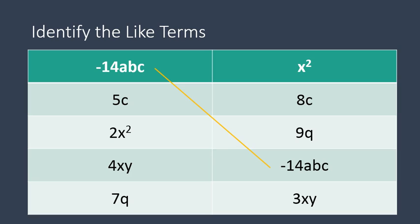Negative 14abc. It's exactly the same term. Same variable and the same number. But we are only looking at the variable. 5c and 8c both have the variable of c. 2x squared and x squared both have the variable of x squared. 4xy and 3xy both have a variable of xy. And 7q and 9q both have a variable of q. So that's how we can identify these like terms.